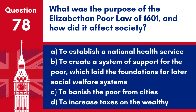Question 78. What was the purpose of the Elizabethan Poor Law of 1601 and how did it affect society? a. To establish a national health service. b. To create a system of support for the poor, which laid the foundations for later social welfare systems. c. To banish the poor from cities. d. To increase taxes on the wealthy. Answer: b. The Elizabethan Poor Law of 1601 established a system for the relief of the poor, which is considered one of the world's first government-sponsored welfare programs, affecting how society cared for its most vulnerable.